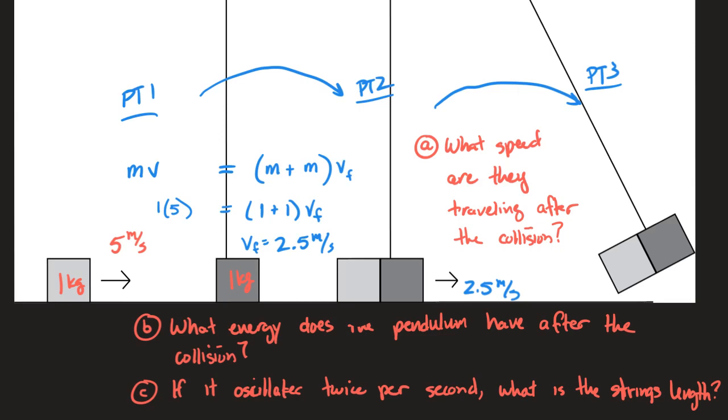So for this problem, what that suggests I should do is find the kinetic energy of the system at the bottom right here, because that's going to be the energy of the system. The pendulum doesn't have any potential energy then - all the energy is in the form of kinetic. So the kinetic energy at this point is the energy of the pendulum.